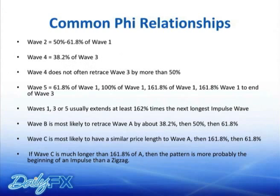Getting into Fibonacci: common Fibonacci relationships are useful to have because knowing when to measure matters. A lot of people use Fibonacci but may not be using it in the context of the wave principle, so they may not be measuring from the correct places. The most important relationships are those that relate to each other within an impulse or a correction — how waves one, three, and five relate to each other, and how A and C relate to each other.